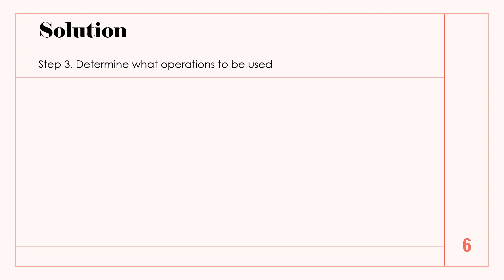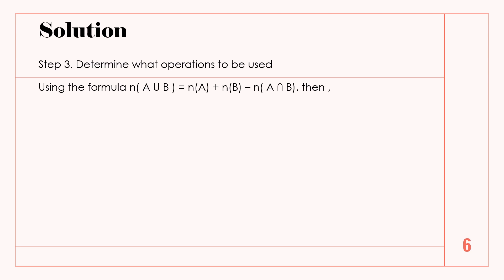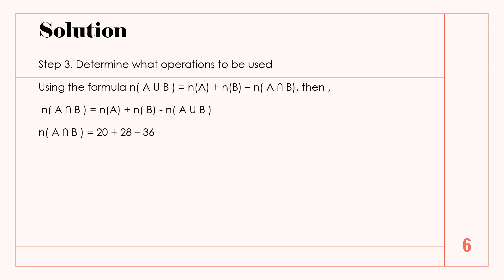Step 3: Determine what operations to be used. Using the formula, the cardinality of A union B equals the cardinality of A plus the cardinality of B minus the cardinality of A intersect B. Therefore, the cardinality of A intersect B equals the cardinality of A plus the cardinality of B minus the cardinality of A union B.